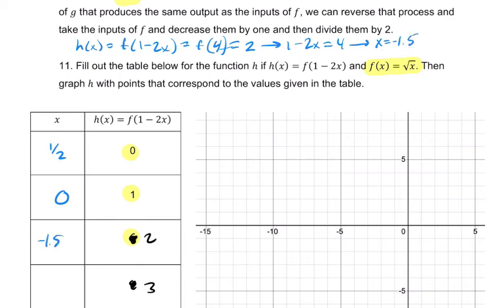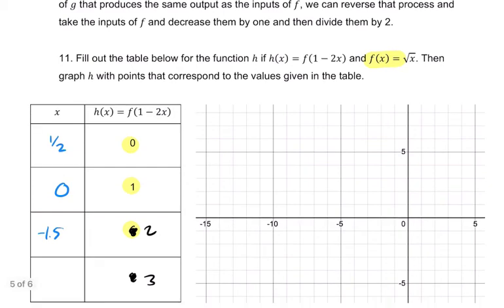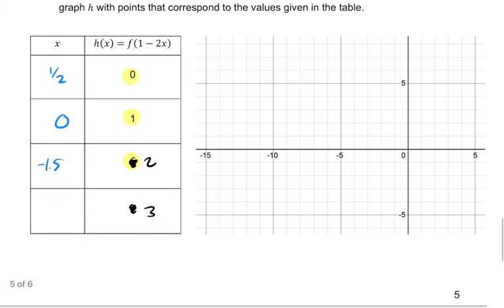So that happens at negative 1.5. And then finally, our last output is 3. So that happens when you look at f of 9. So I want to know, when does 1 minus 2x equal 9? Now that happens, subtract by 1, you get 8. Divide by negative 2 is negative 4. And that's the answer.